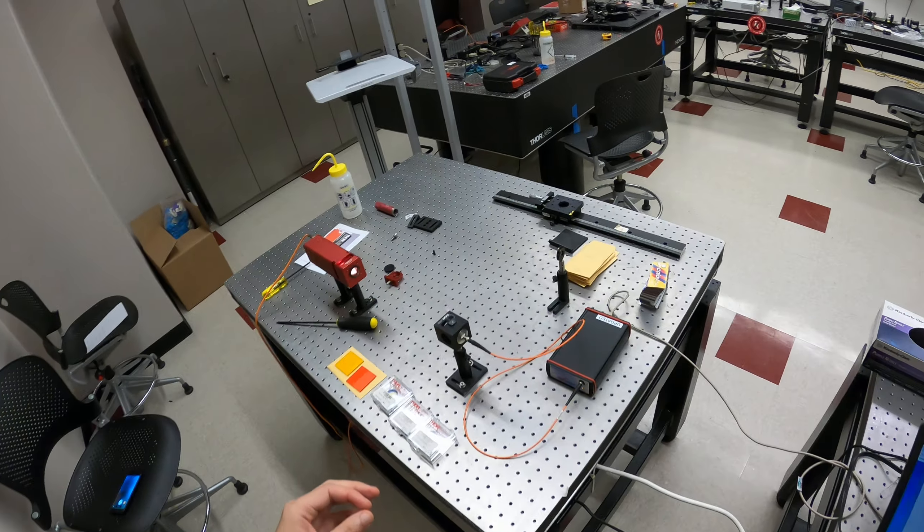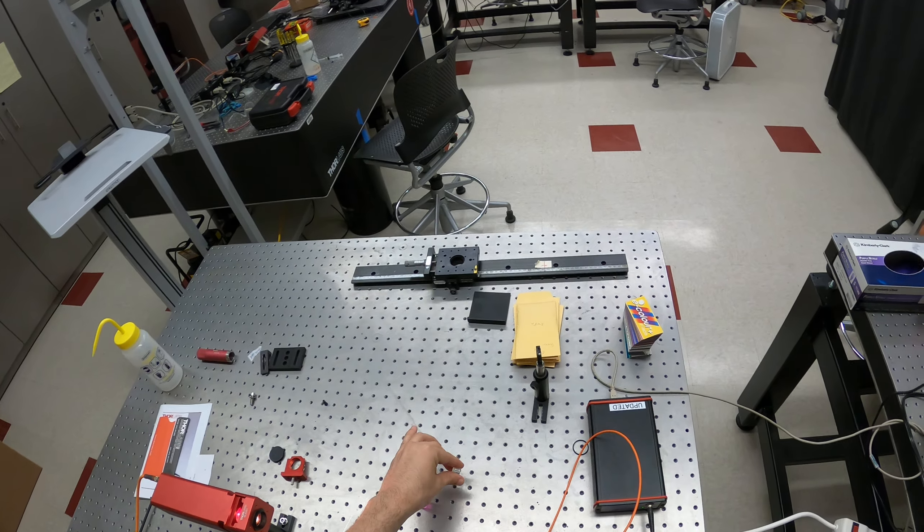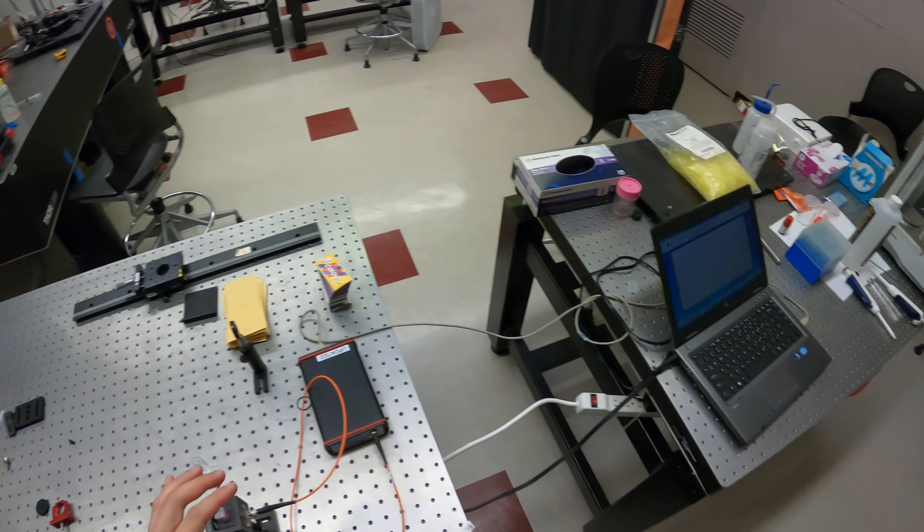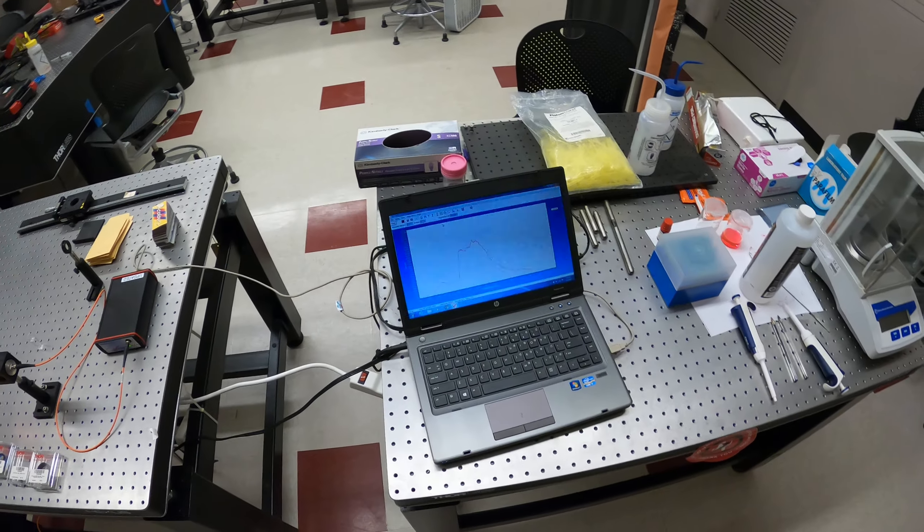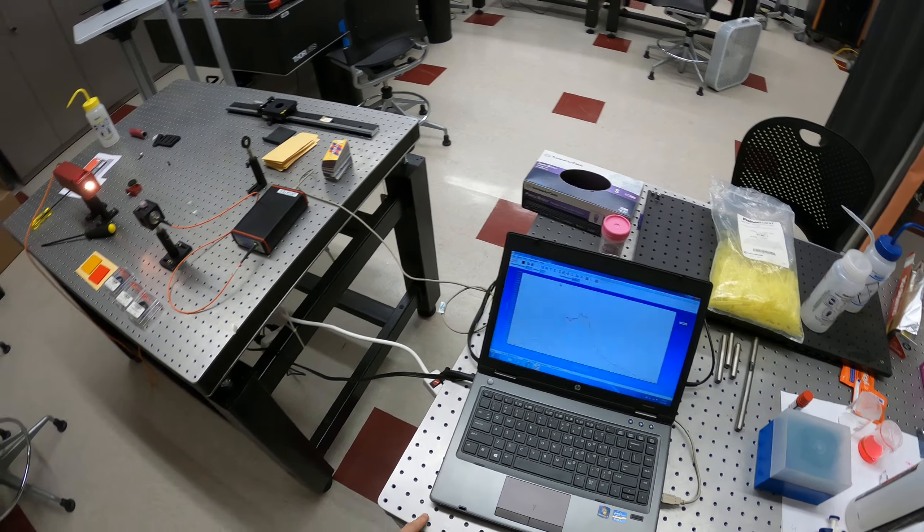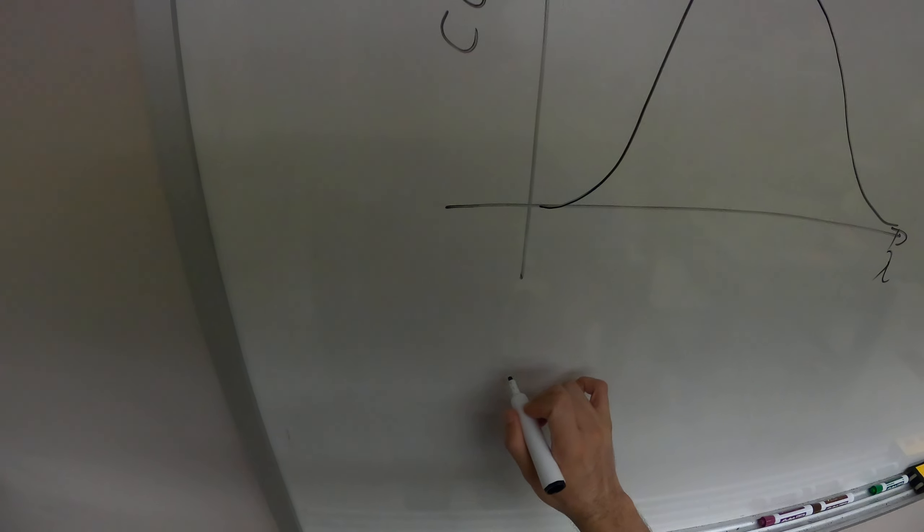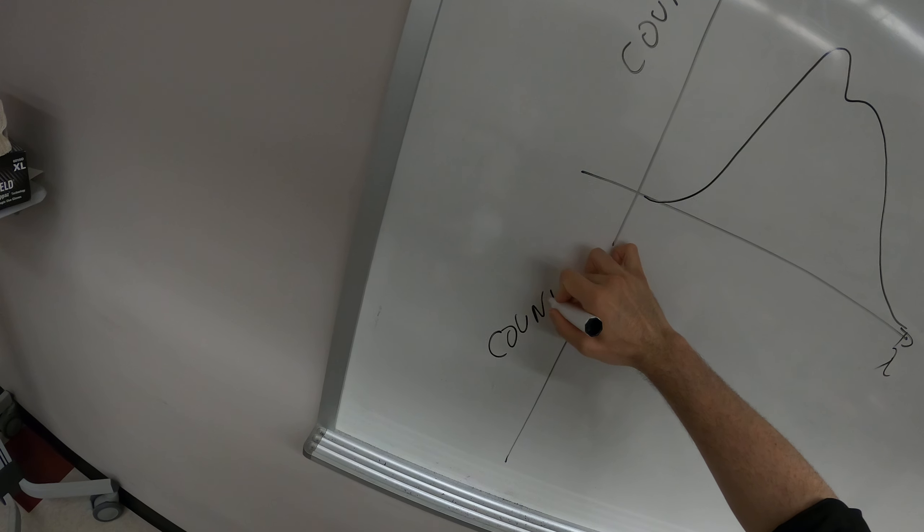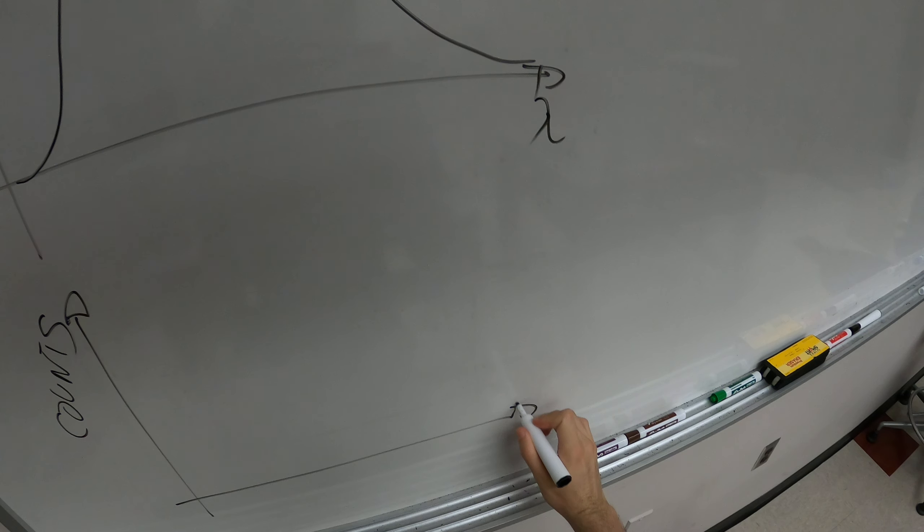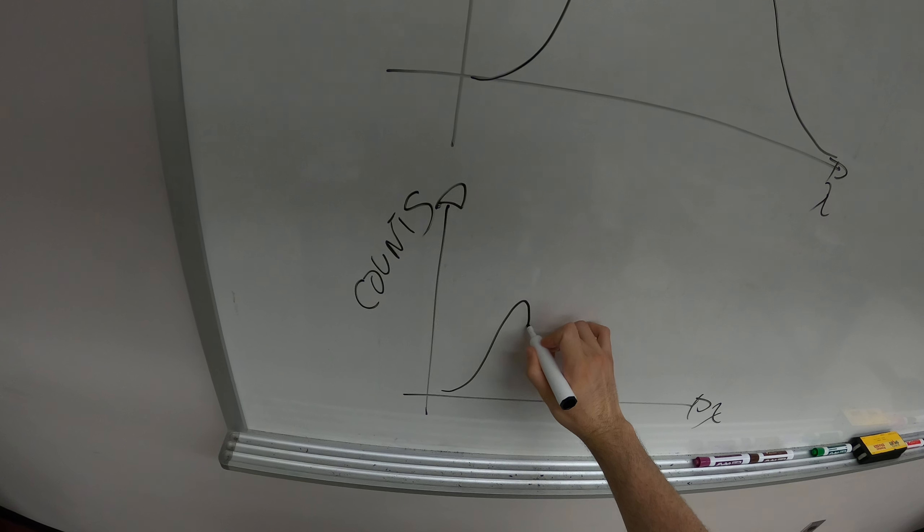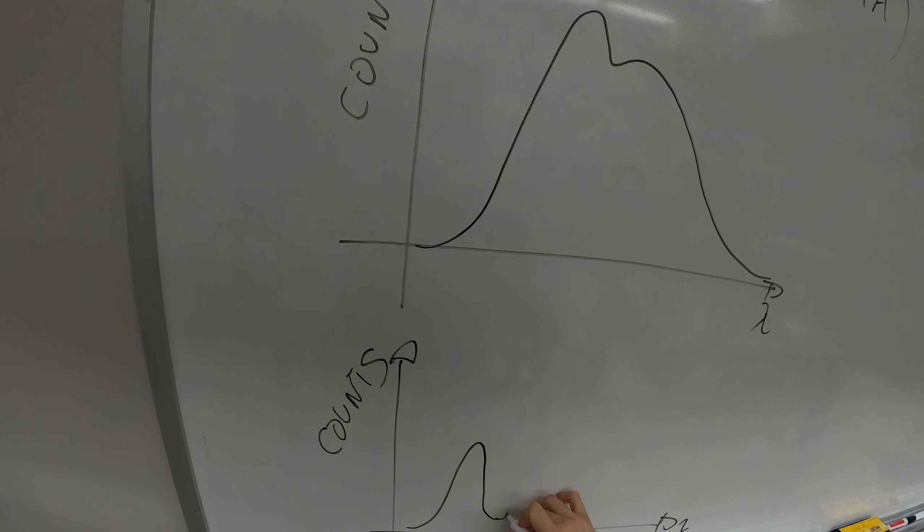Then we remove the reference, replace it by the dye solution, and then we get a dip in the spectrum. Now we have here counts, and on the x-axis lambda, and you get a dip in the spectrum.